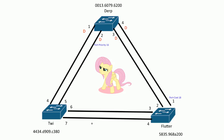Hey everybody, this is my second video scenario of Spanning Tree Protocol — how to find all the port roles. If you watched the first one, you have a pretty good idea of how to find all the root ports, designated ports, and alternate blocked ports. Now I changed things up a bit: on the derp switch here on port 2, I changed the port priority to 16.